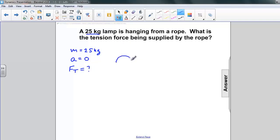Let's start off by drawing a little picture. Here's a crude picture of a lamp and we have two forces acting on it. One is the weight of the lamp pulling down. The other is the force of tension in the rope pulling it up.